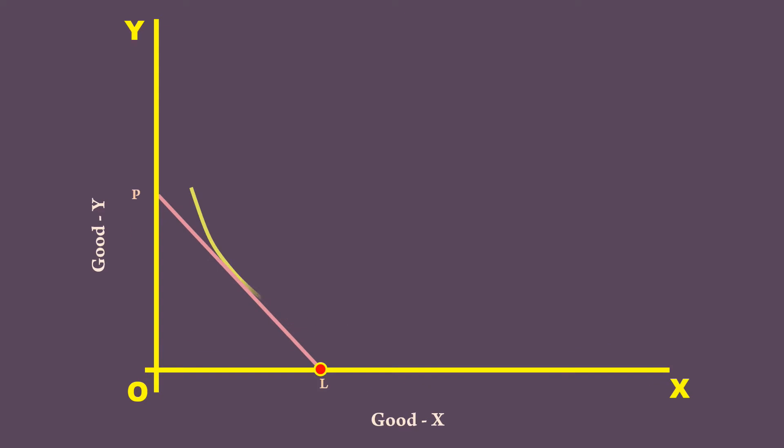IC1 is tangent to the price line TL at point E1. The consumer is in equilibrium at E1 to begin with. He buys M1 units of Good X.